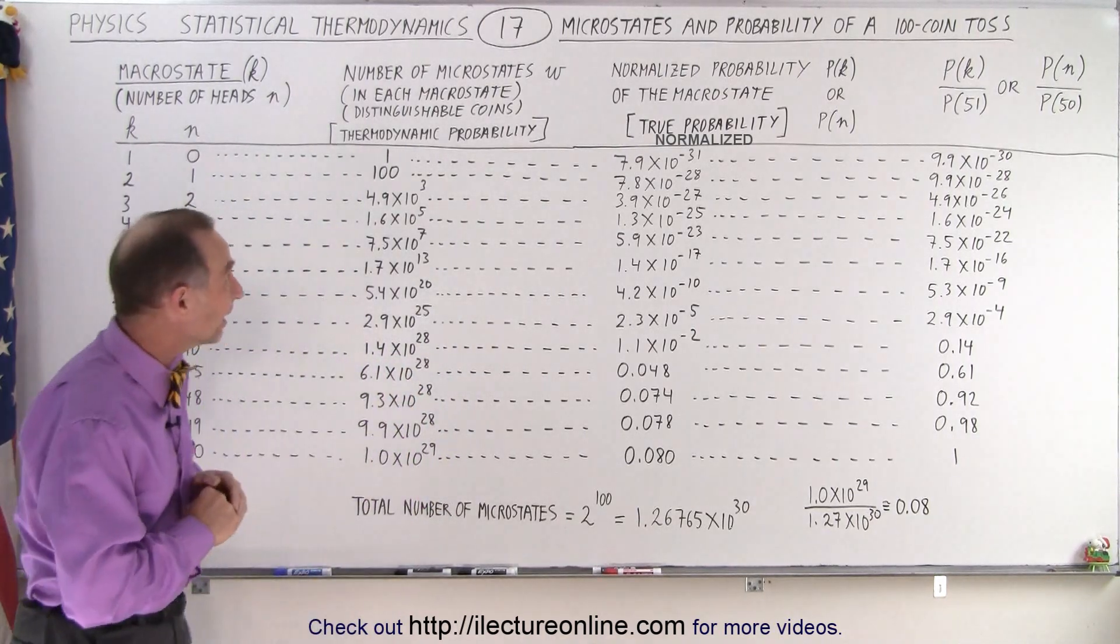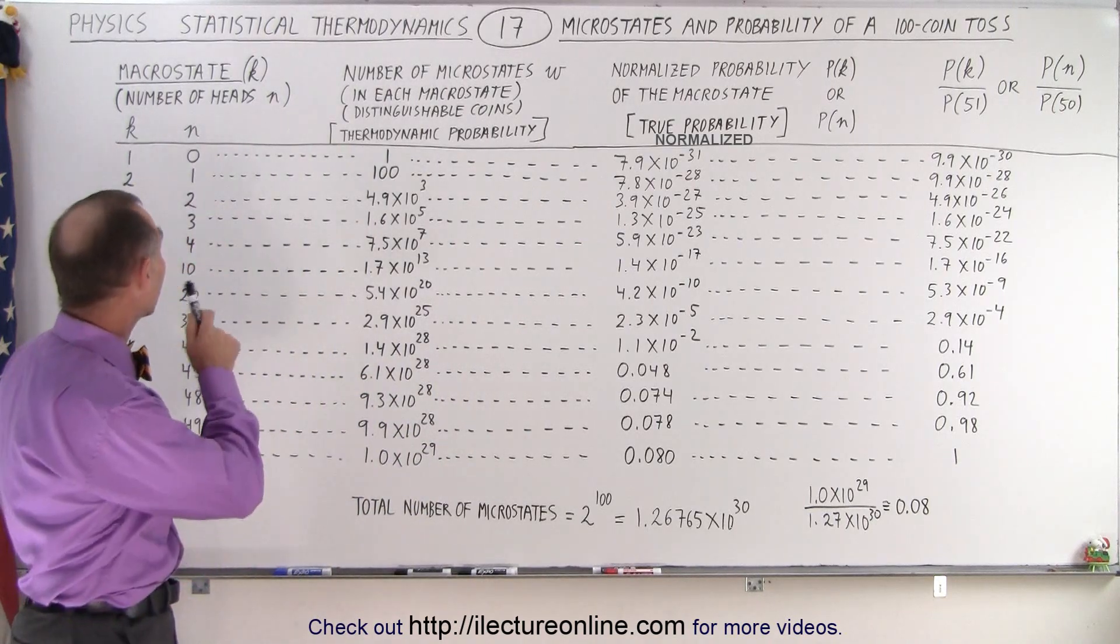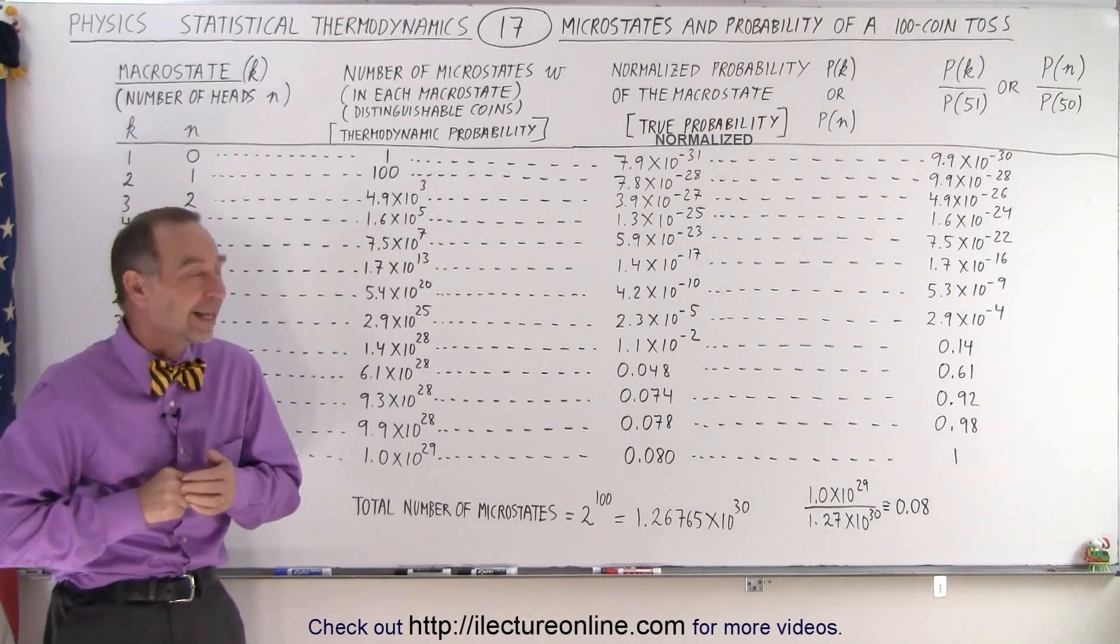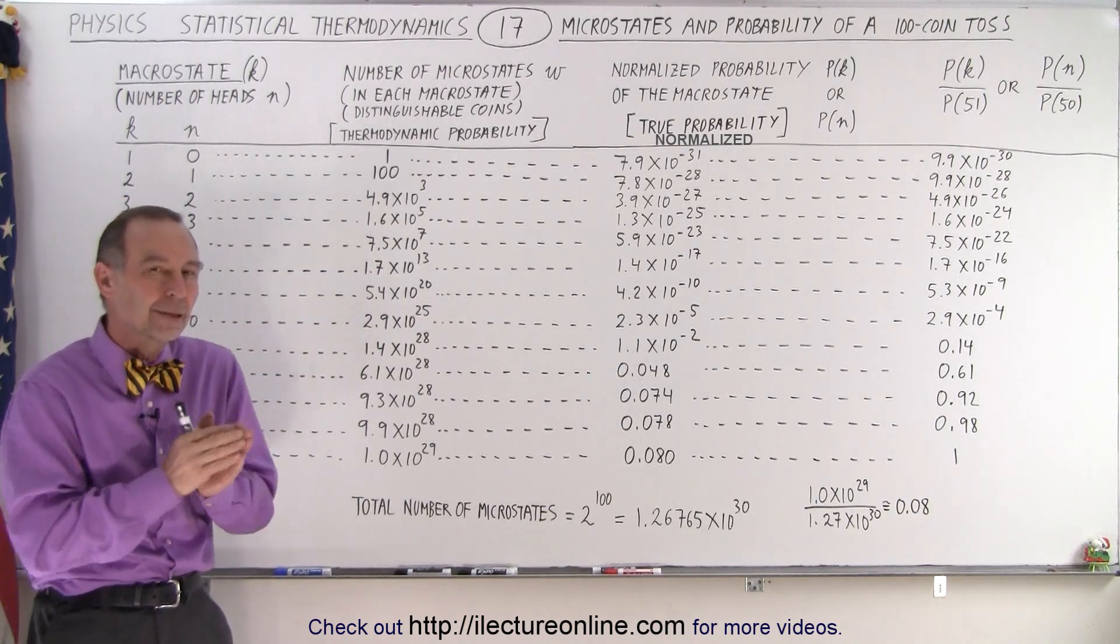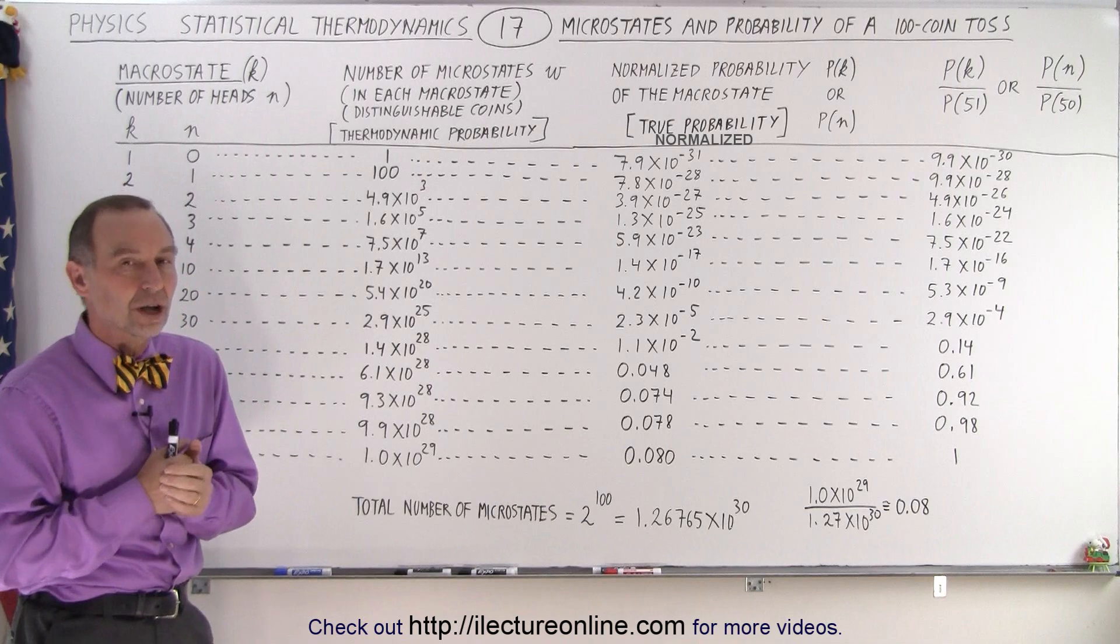But anyway, here we are. We're starting on it. And this is number 17. We're talking about statistical thermodynamics. And in particular, we're going to be looking at the macrostates and the probability of a hundred coin toss.